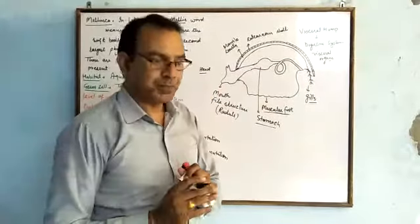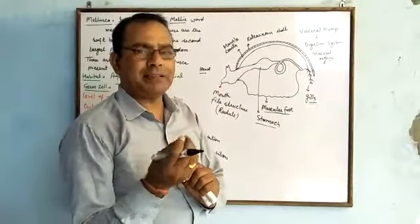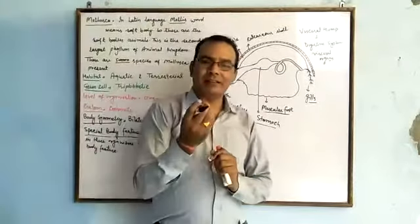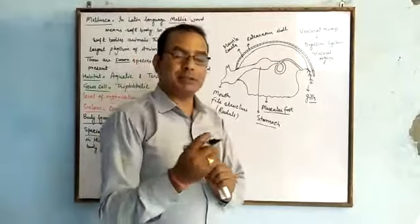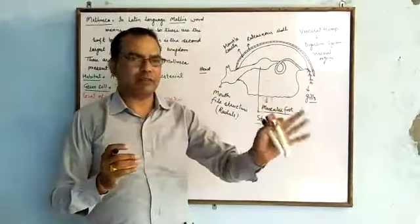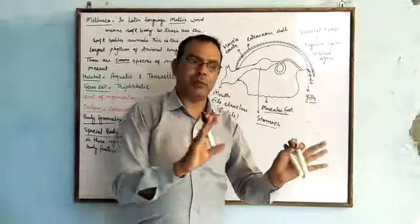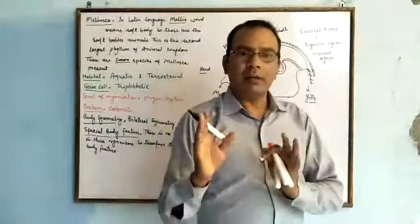Males produce sperm and females produce ova. Sexual reproduction takes place. But some examples like Aplysia and Turris are monoecious, meaning bisexual. Sexual reproduction can take place in both dioecious and monoecious forms.